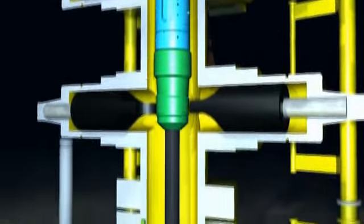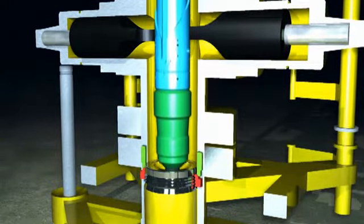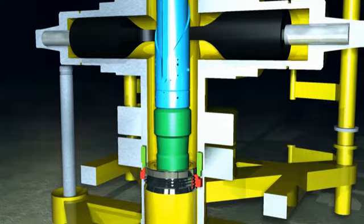Once the alignment sequence is complete, the tubing hanger is then landed and locked into the wellhead with the application of hydraulic pressure. This hydraulic pressure is applied from the surface via the landing string control umbilical.